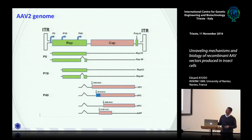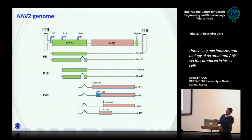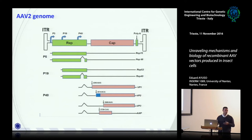The CAP gene is responsible for producing the capsid proteins. In the wild-type system, we have two promoters, P5 and P19, which express the REP proteins — large REPs 78 and 68, which are splicing forms of each other, and small REPs 52 and 40. The capsid proteins are expressed from the P40 promoter, with a specific stoichiometry for VP1, VP2, and VP3 — approximately 1:1:10, with VP3 being the major protein.